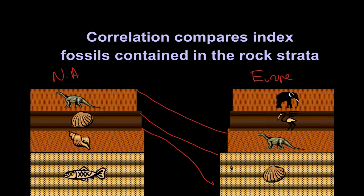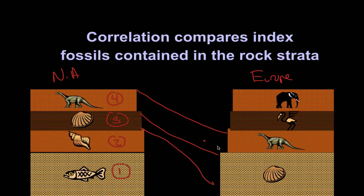We generally know that the oldest rock layer is going to be found on the bottom. Comparing the two columns, if this shell fossil is on the bottom here but appears higher up over there, those lower layers must be older. So we sequence them: one being the oldest, then two, three — and we can see that this rock layer over here is also layer three, forming at the same time. Continuing up: four, five, and six. The layers numbered three in each column are matching up, having formed at the same time. You've just correlated your first rock layers.